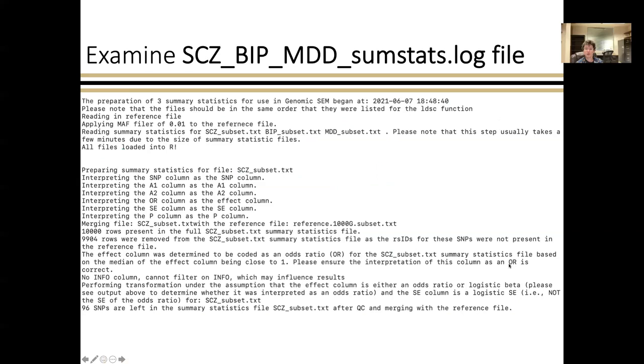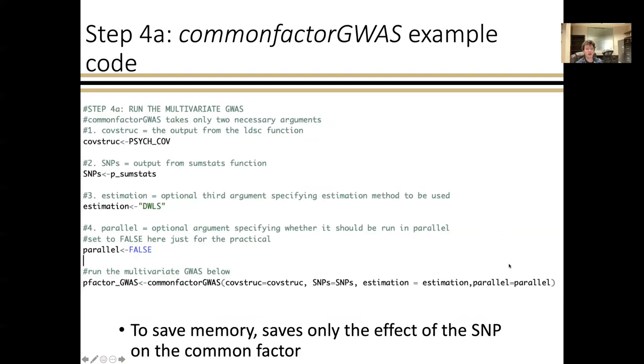So putting that all together, you'd run the sum stats function here. And much like the mung function, this will produce a log file that you want to make sure you go over to make sure everything's interpreted correctly. And then once that's done, you can use that output in combination with the LD score regression output to run models that include the effects of individual SNPs.